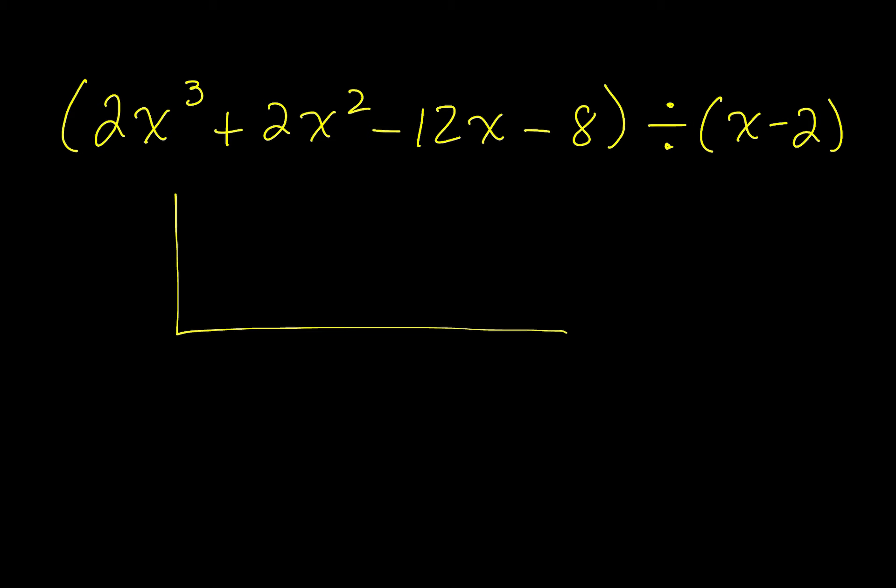We're going to take our coefficients from the polynomial, which is 2, 2, negative 12, negative 8, and then we want to use the opposite sign of negative 2, which is positive 2, that goes on the outside.